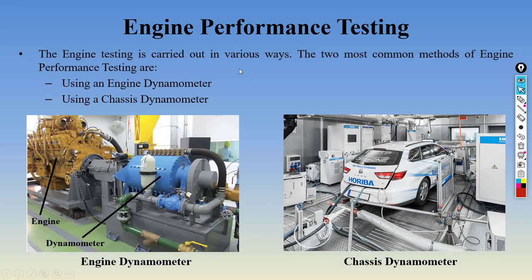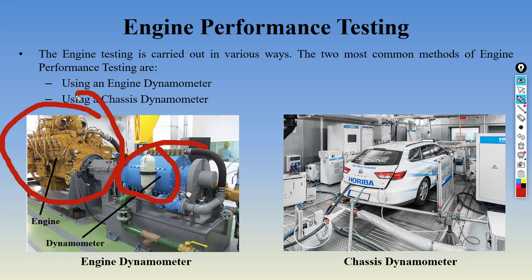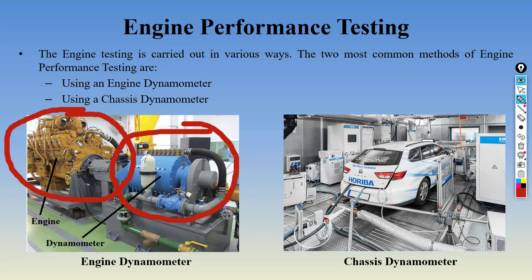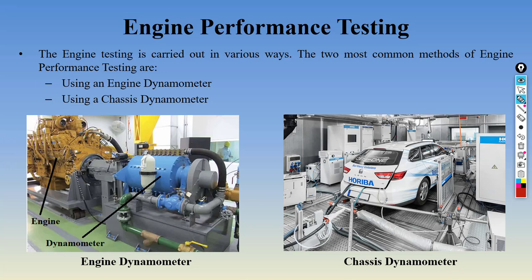There are two ways to check the performance of a vehicle. The first is using an engine dynamometer — the engine is connected to the dynamometer and the engine output is tested: RPM, power output, emissions, all these things. Engine dynamometer is easier to use because you do not have to implement the engine on the vehicle itself — you just connect the engine to the dynamometer, connect the exhaust analysis sensor and RPM sensor, and start the analysis.